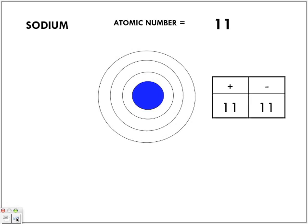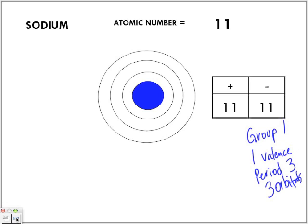Sodium is in group one, so we're going to see only one valence electron. We are in period three, so we're going to have three orbitals or three shells surrounding it. We're going to label the nucleus with NA. This is what we call a Bohr diagram, because Bohr said these electrons do not just circle around randomly — they are at energy levels around the nucleus. There is nothing labeled in the nucleus with reference to Rutherford's work. So we are just labeling it with the symbol.